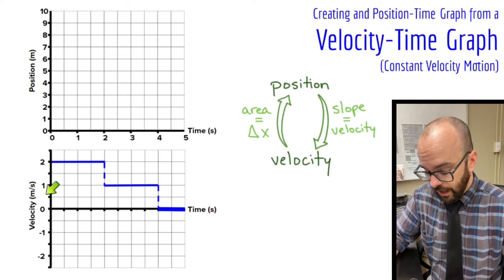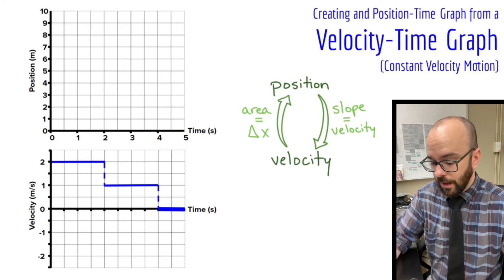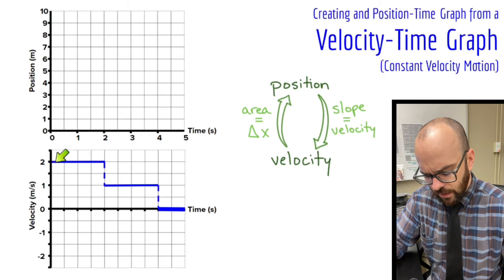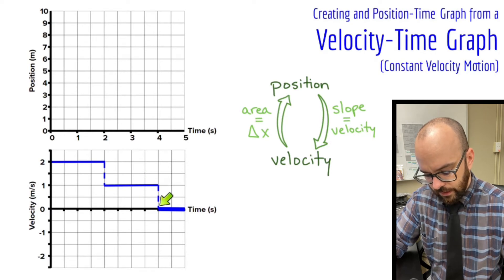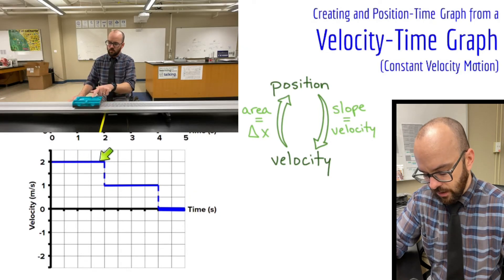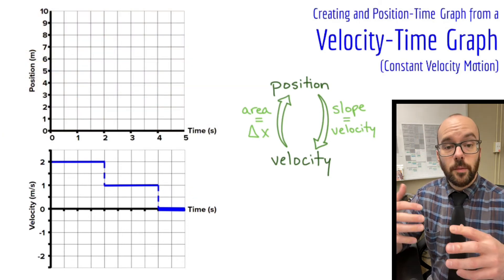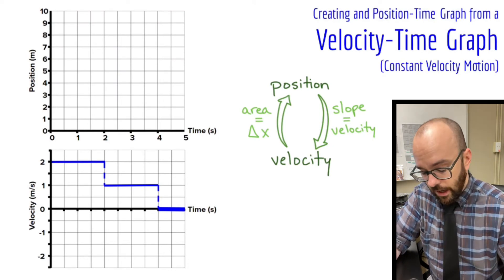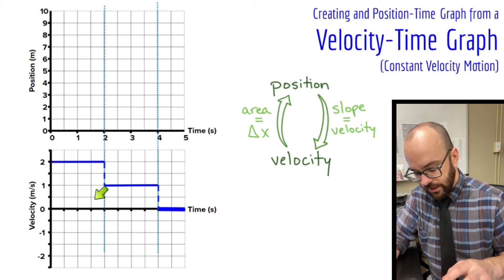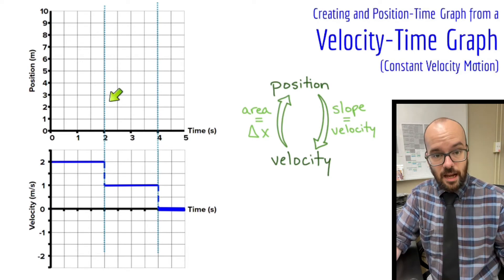In our first example, we have a velocity time graph, and we're going to convert from that to a position time graph describing the same motion. I'm going to start by reading my velocity graph. I have an object moving in the positive direction pretty quickly, then suddenly moving slower in the positive direction at another constant speed, and then it's stopped in that last second. I'll create a position time graph that correlates to that, including a dotted line to keep everything vertically aligned.